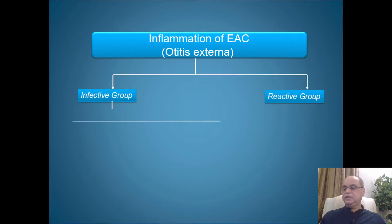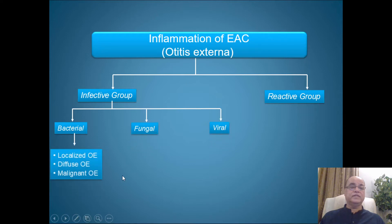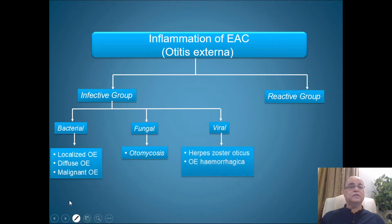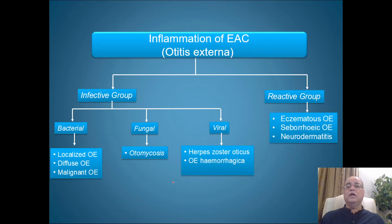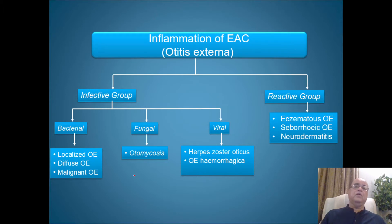Inflammatory diseases of the external auditory canal — that's what we call otitis externa. This otitis externa is divided into two main groups: one is the infective group and the other one is the reactive group. The infective group is again divided into subtypes depending upon the offending organism involved.